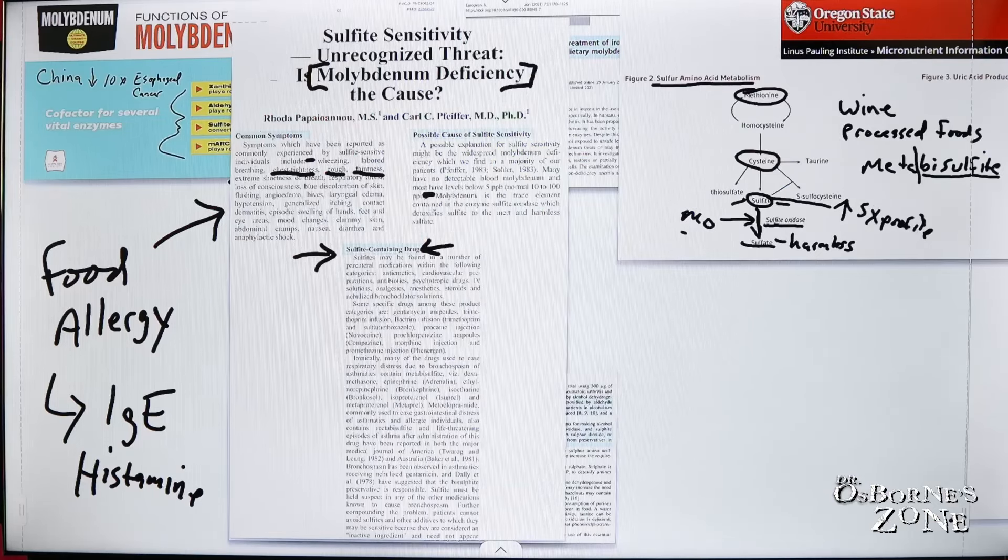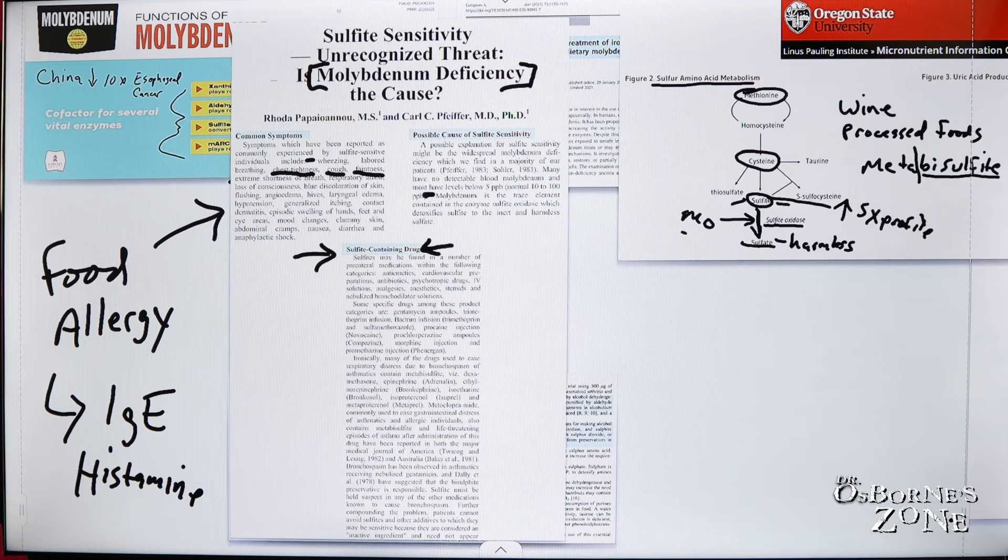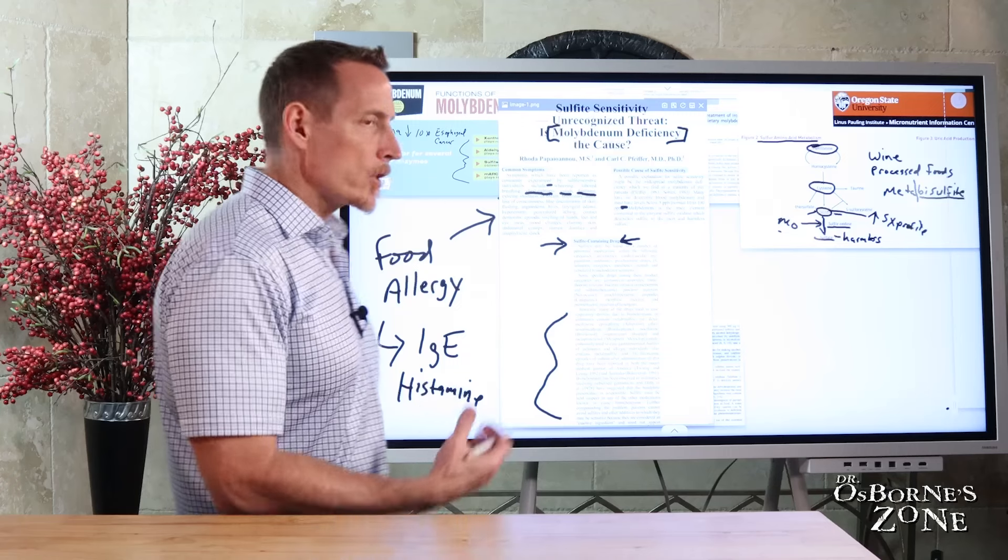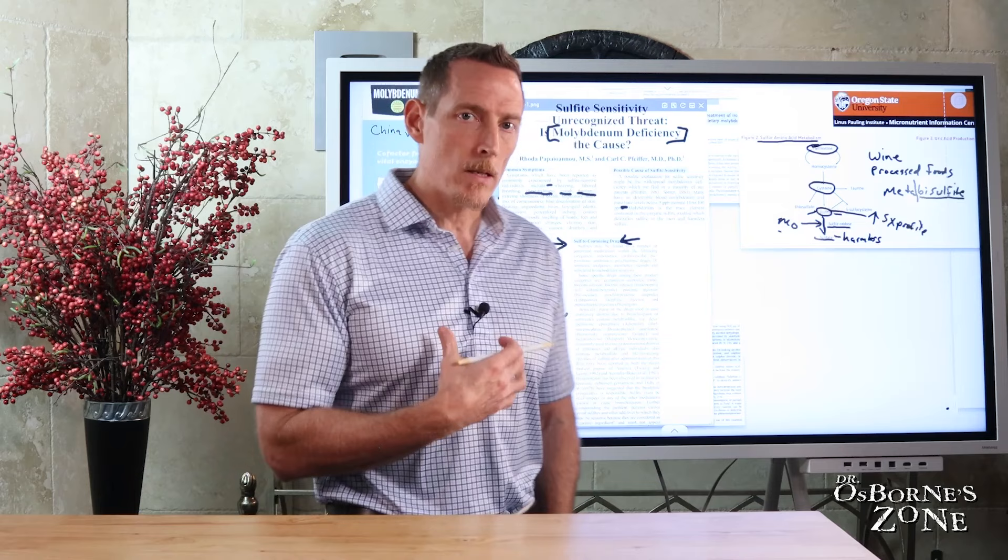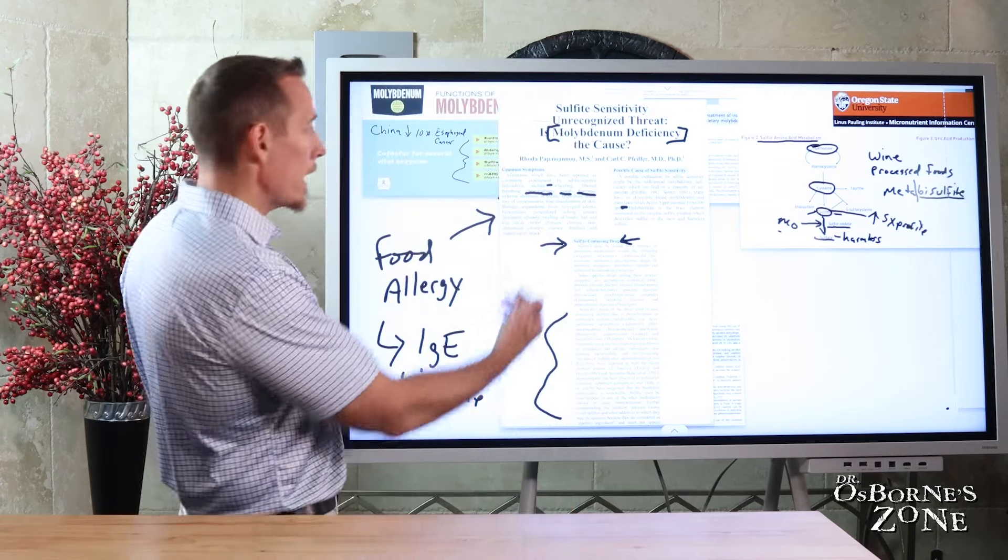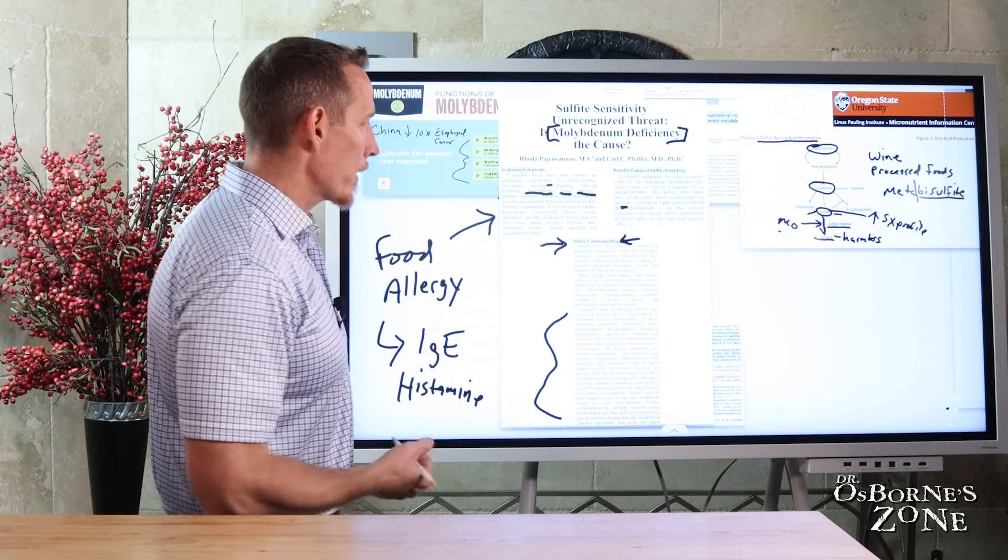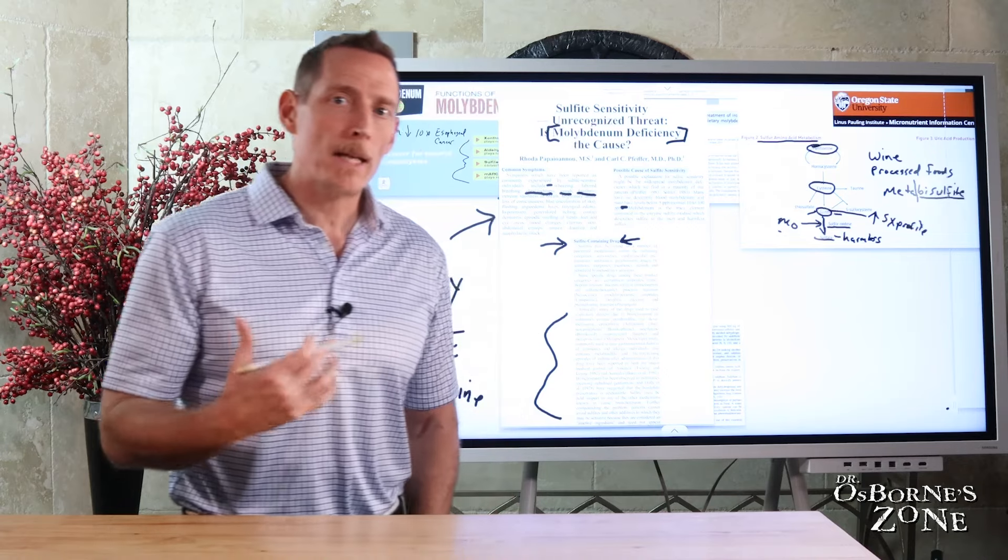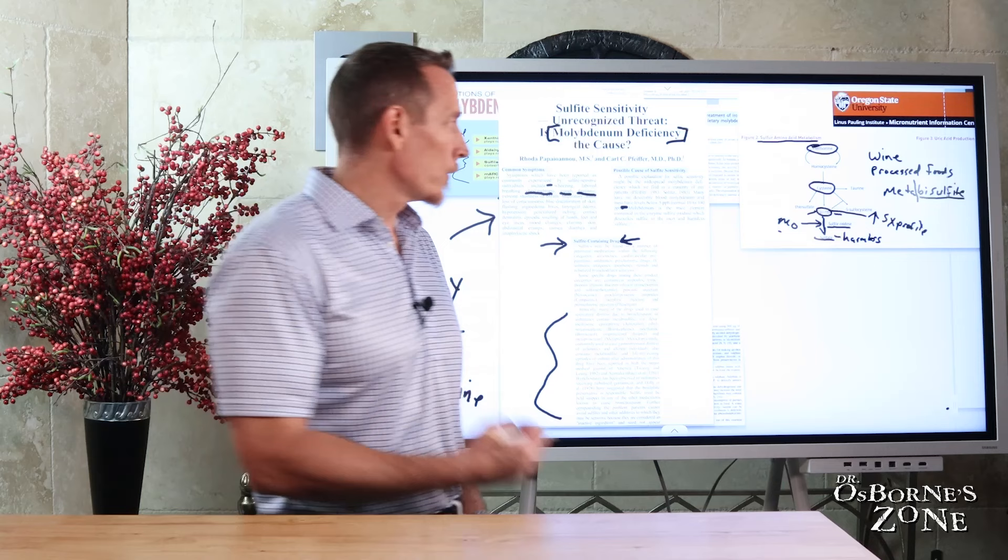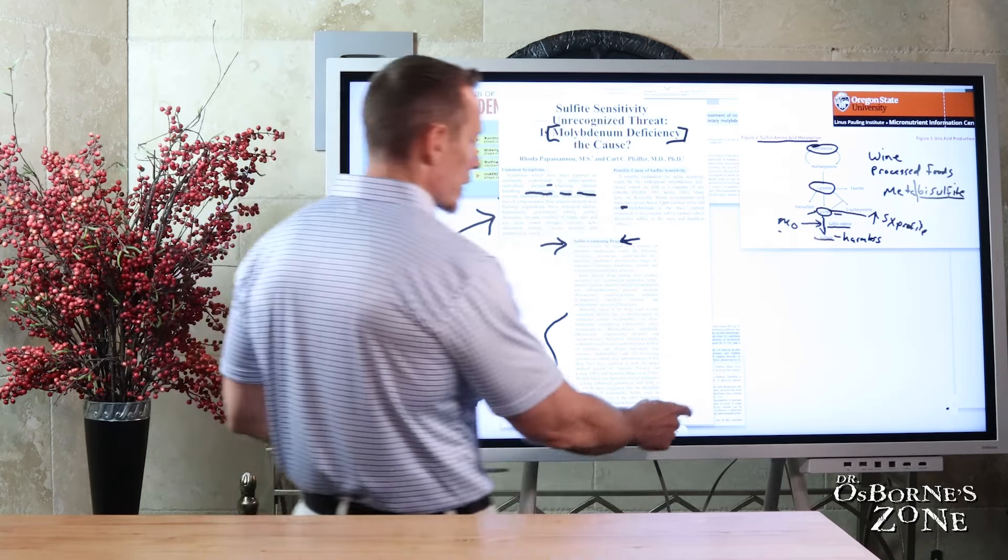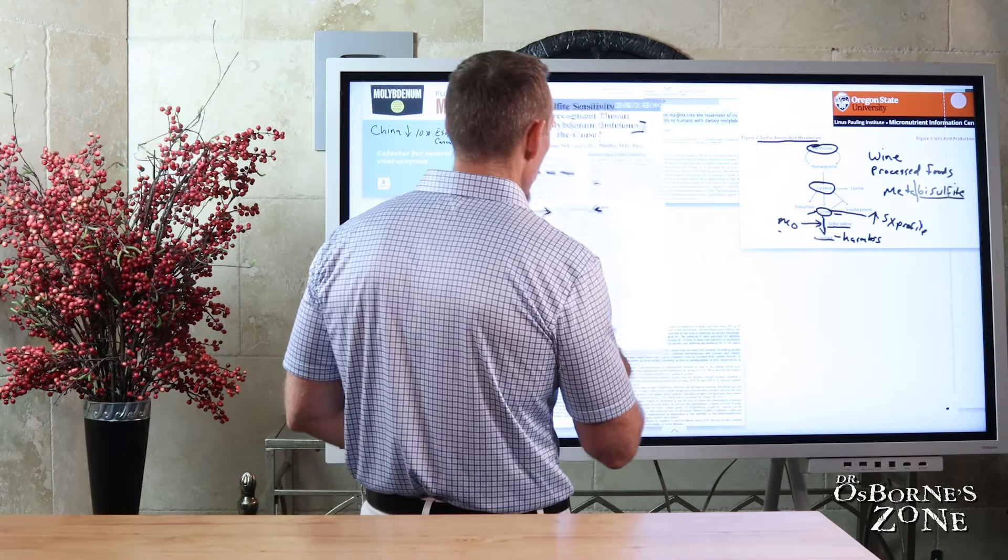You've also got a number of other medications here, Novocaine, different types of morphine as well. And then moving down the list, there's a number of other drugs that are ironically used in treating asthma or in treating airway disease that have sulfites that can create a lot of the symptoms, respiratory arrest, shortness of breath. Same symptoms as asthma. So check your medications and look for sulfite. If you find that you've got a history of possibly reacting to them, you might also consider molybdenum in that scenario.